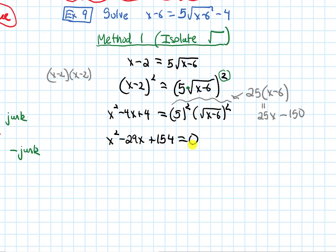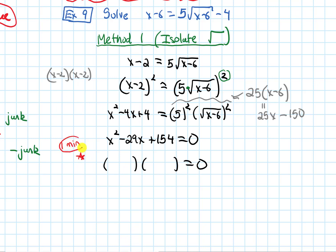So I have this quadratic now. Usually the first thing I do is think about how I could factor it, and it turns out this does factor. I'm going to ask you to pause the video for a minute and see if you can figure out how this factors. This factors as x minus 7 times x minus 22. You could also use the quadratic formula, but it's a bit more work. This gives us x equals 7 or 22.